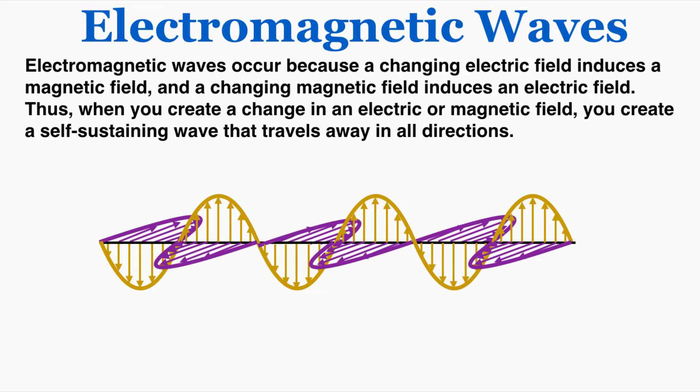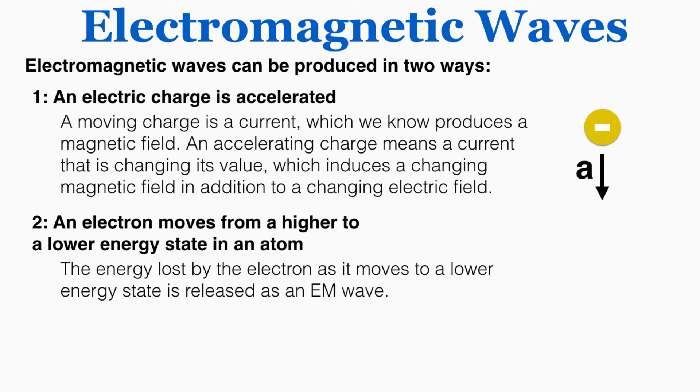And there are two ways to create a change in an electric or magnetic field. So there are two ways to produce an electromagnetic wave. This question has appeared on the IB test in the past, so it's important to understand these are the two ways that electromagnetic waves can be produced. The first way is to accelerate an electric charge, and the second way is to move an electron from a higher to a lower energy state in an atom.